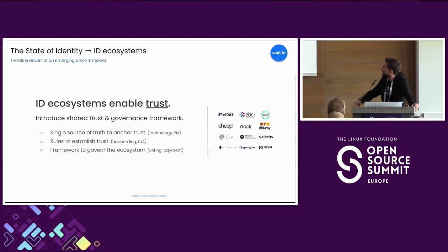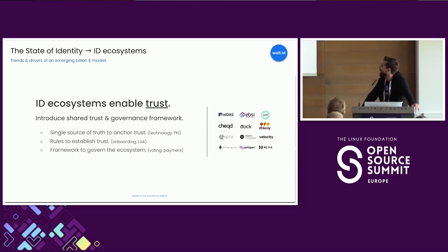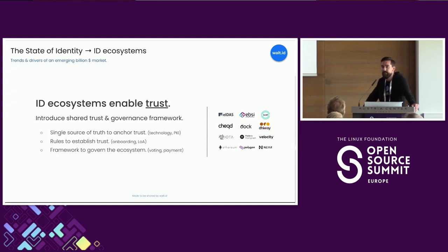On the right-hand side, I included a couple of identity ecosystems that we're seeing today. I think only two years ago the list was much shorter — maybe one or two. But now you can see public sector ecosystems coming up, ecosystems by international organizations, and by private businesses in different verticals as well. We really see this flourishing of new identity ecosystems coming up, although it's still early days.